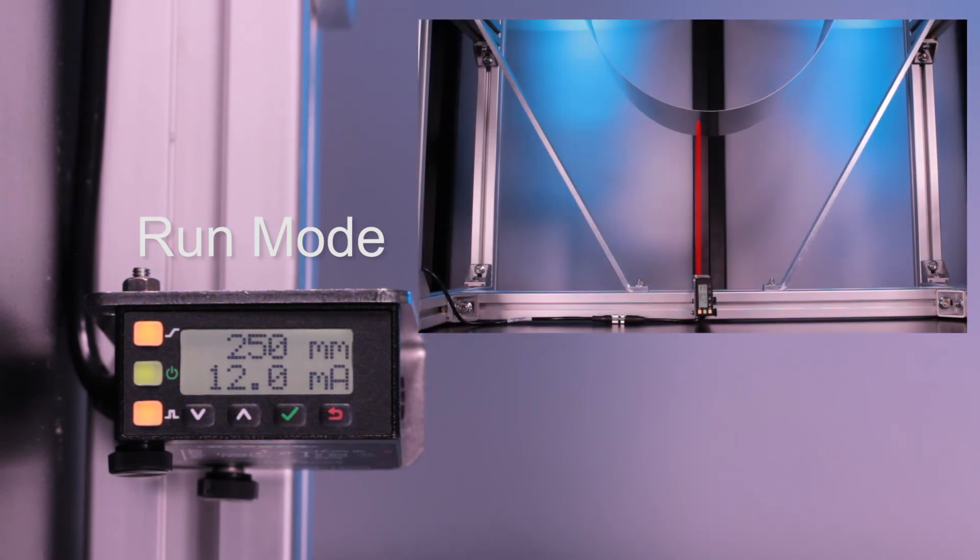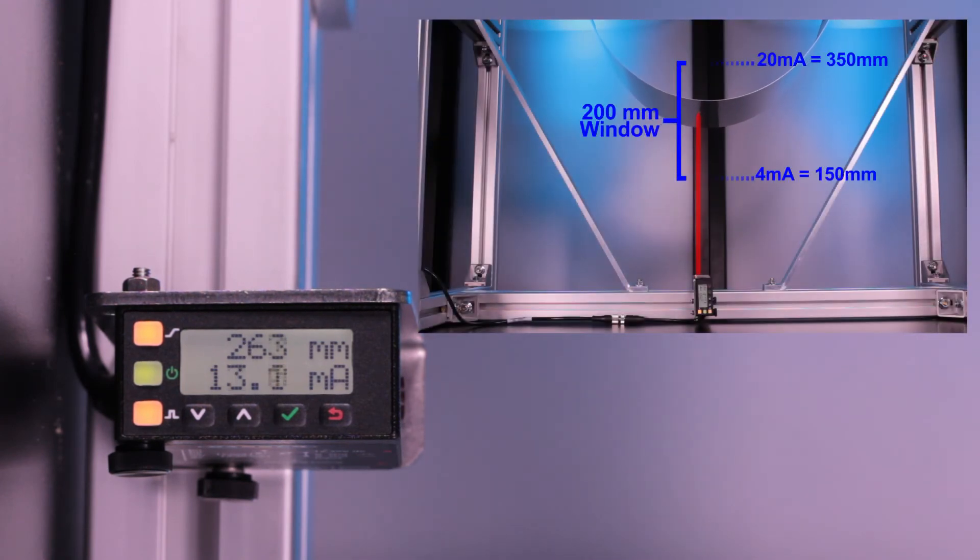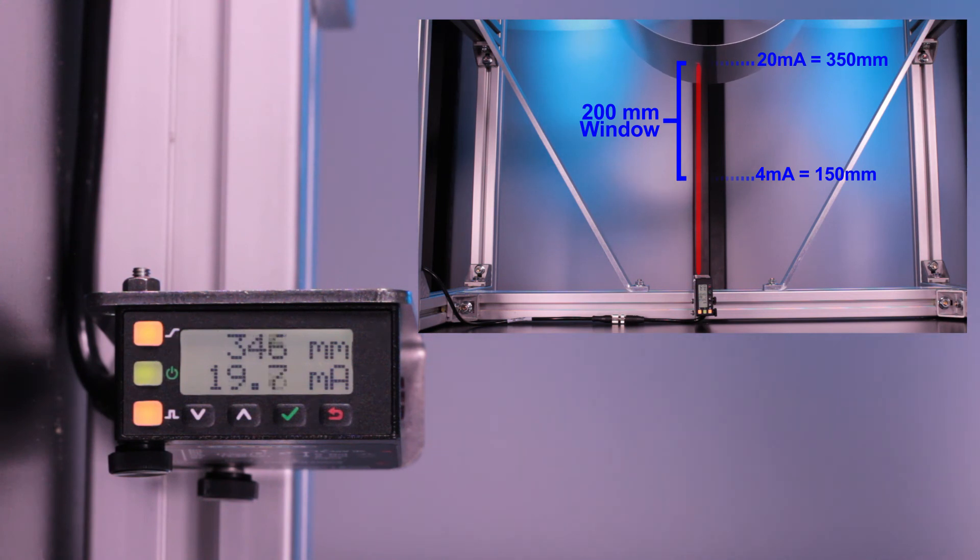As the tension increases and the loop leaves the taught analog window, the LED light will turn off as an easy visual indication to the operator that the target is out of the taught range.